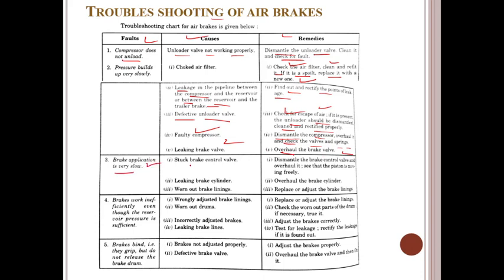If brake application is very slow: causes include stuck brake control valve — dismantle the pistons and brake control valve, overhaul, and see that pistons move freely; leaking brake cylinder — overhaul the brake cylinder; worn brake linings — replace or adjust. If brakes are ineffective even though reservoir pressure is sufficient: causes include wrongly adjusted brake timing, worn drums — adjust the brakes; leaking brake linings — replace or adjust; check worn-out parts of the drum and re-bore if necessary; adjust brakes correctly, test for leakage, and rectify any leakage found.